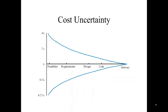The other thing is cost uncertainty. Early in the process you're going to be less certain as to what the cost is, but by the time you deliver the software you should pretty much know what the cost is. This graph from Somerville illustrates that the further along you go, the better bounds you have on what it is going to cost.